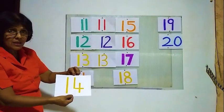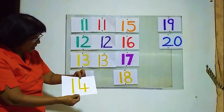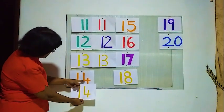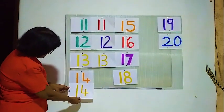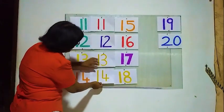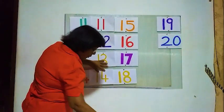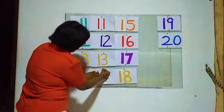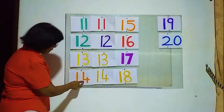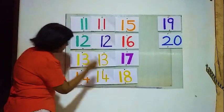Is this correct? Is this number correct? 1 and 4, here 1 and 4 — is this correct? Yes! This is 14, this is 14 — number 14, 14 and 14. Right.